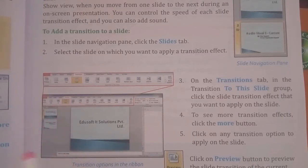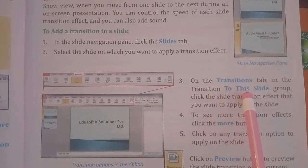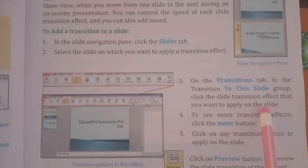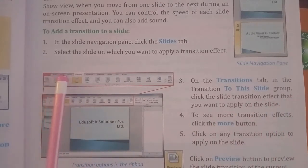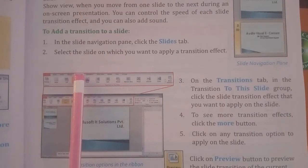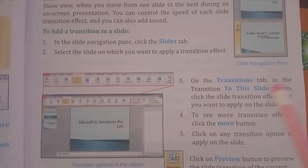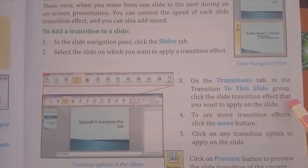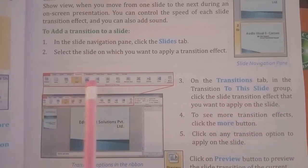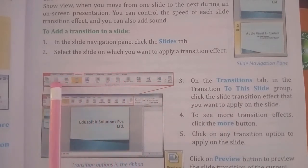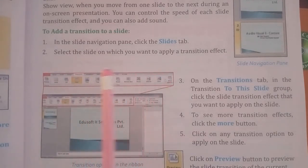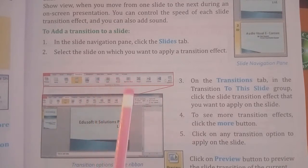In step 3, on the Transition tab, in the Transition to This Slide group, click the slide transition effect that you want to apply on the slide. We will see the Transition tab — in the Transition to This Slide group, click the slide transition effect that you want to apply.